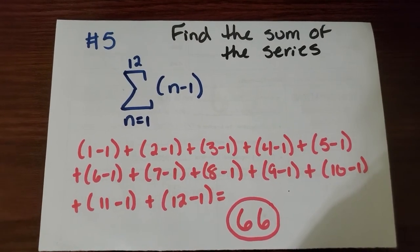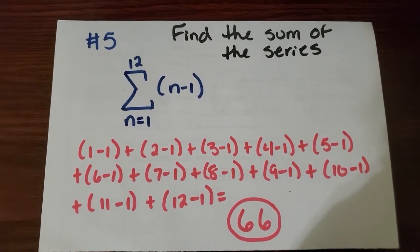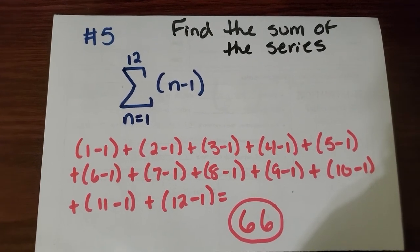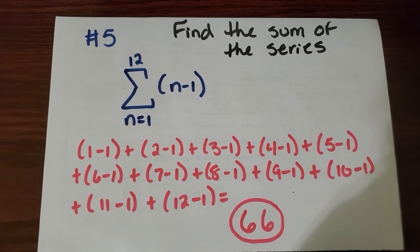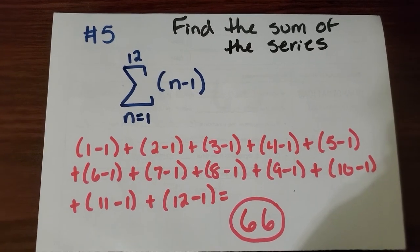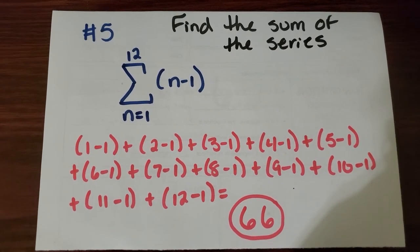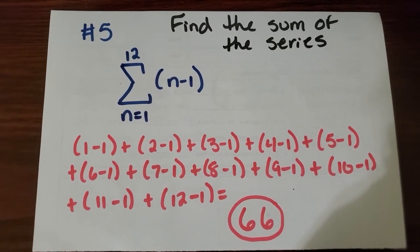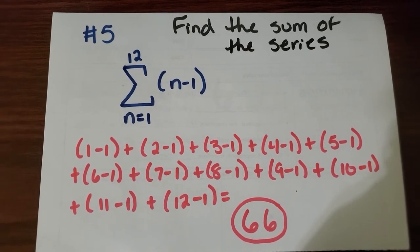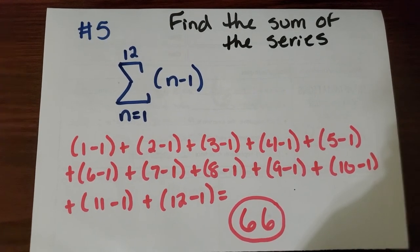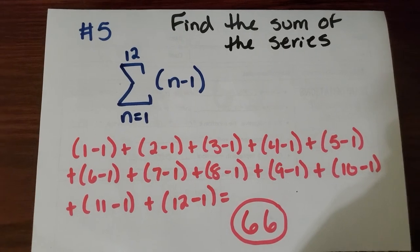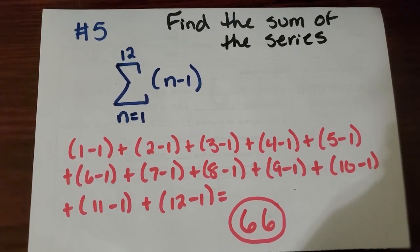So let's look at question number 5 together. Question number 5 says find the sum of the series. And we have above the Greek letter the number 12, below it n equals 1, and the formula is n minus 1. So what we're being asked to do is to start off with 1, go all the way up to 12, and use the rule n minus 1.